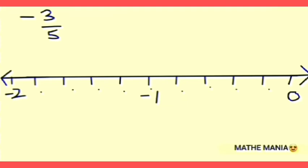To find the position of -3/5, we count 3 starting from the next point after the origin in the negative direction: 1, 2, 3 — and this is the point which represents -3/5.